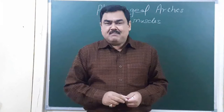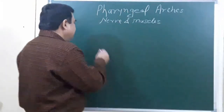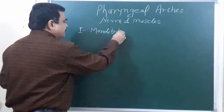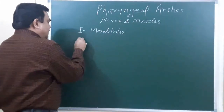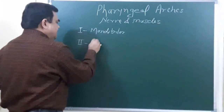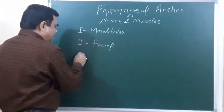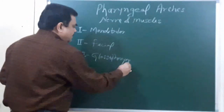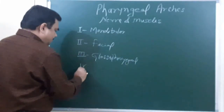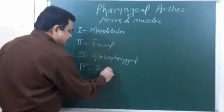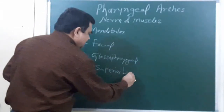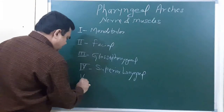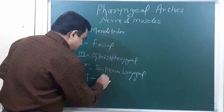Now we will discuss the nerves and muscles of the arches. The nerve of the first arch is the mandibular nerve. The nerve of the second arch is the facial nerve. The nerve of the third arch is the glossopharyngeal nerve. The nerve of the fourth arch is the superior laryngeal. The nerve of the sixth arch is the recurrent laryngeal.